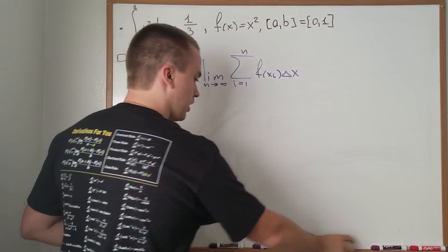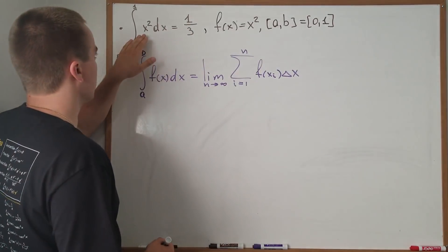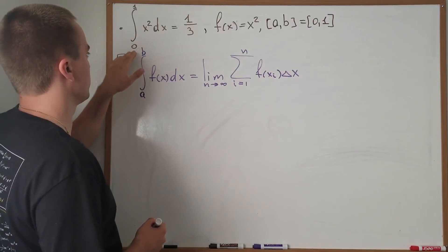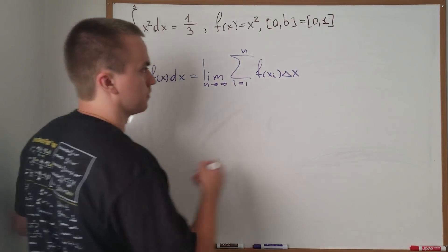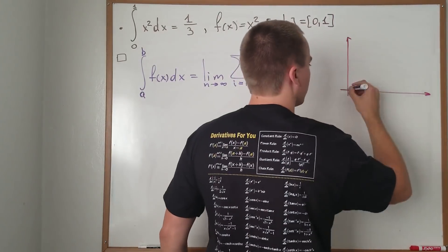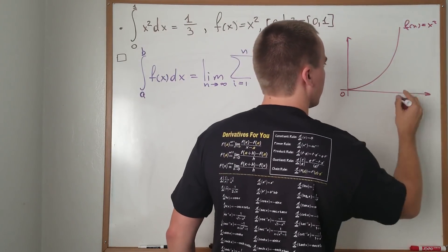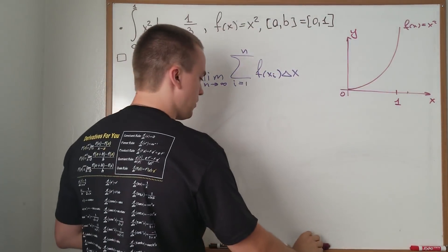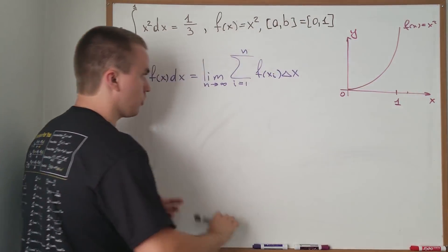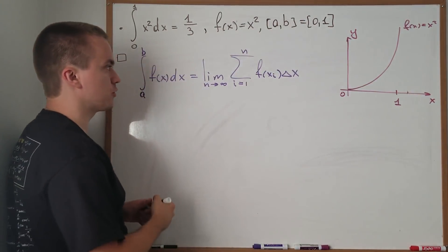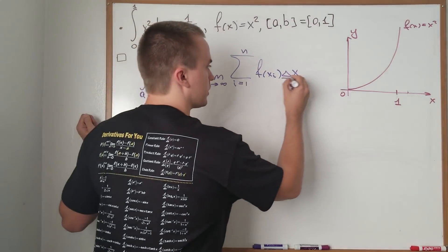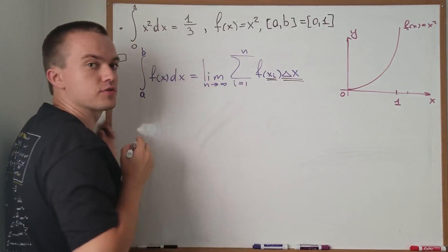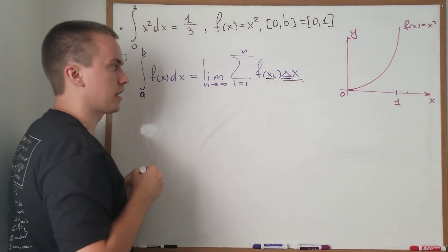But before we do that, let me draw the graph of x squared from 0 to 1. Okay, we have this graph. To solve this problem, we first need to figure out what our Δx is and what our xᵢ is. So let's first find Δx.